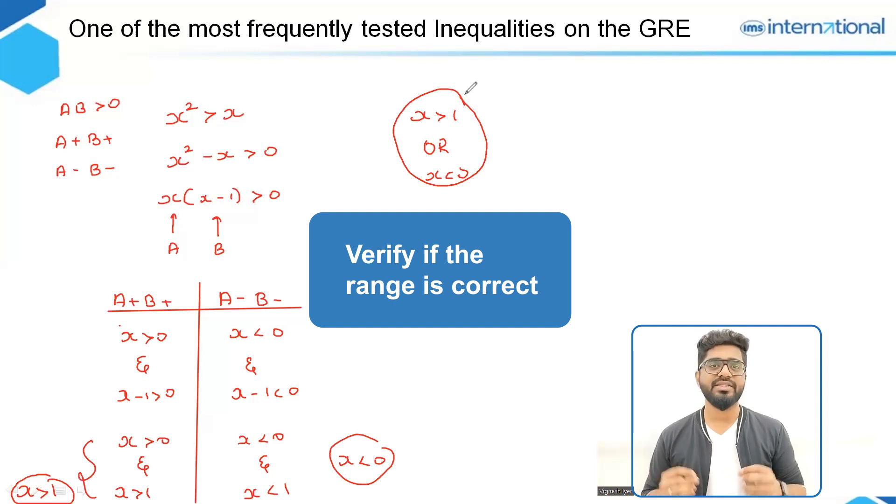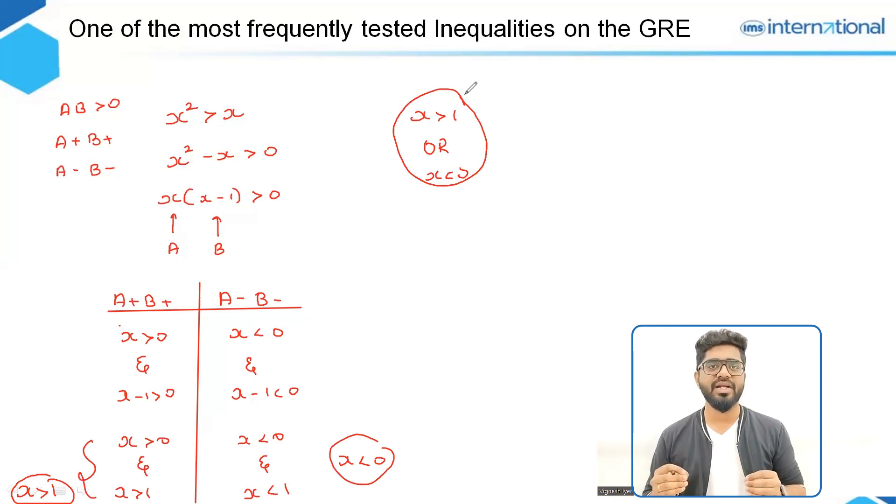Now to verify if this is correct or not, we can take a value that lies between 0 and 1, for example 0.5. Now when X is equal to 0.5, the square of 0.5 actually becomes less than 0.5, because 0.25 is actually less than 0.5. So yes, we can conclude that X squared is greater than X only when X is greater than 1 or X is less than 0. Now it will be true for X is less than 0 because the square of a negative number will become positive which will be greater than the negative value.